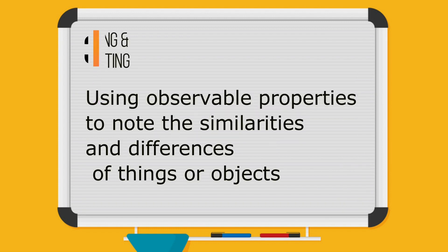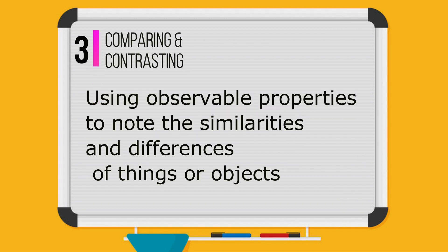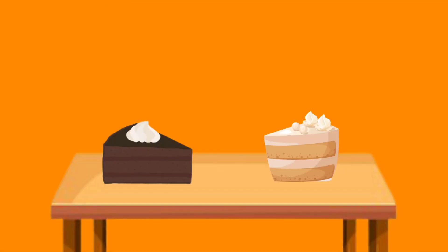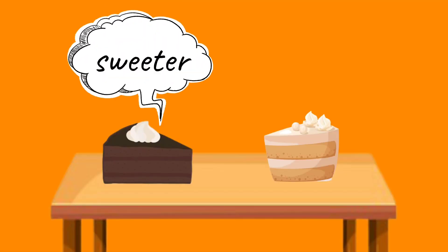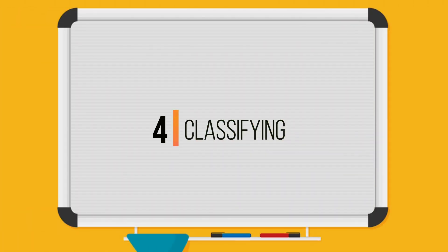Comparing and contrasting: using observable properties to note the similarities and differences of things or objects. Example: chocolate cakes are sweeter than vanilla cakes.